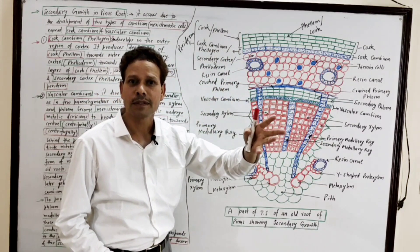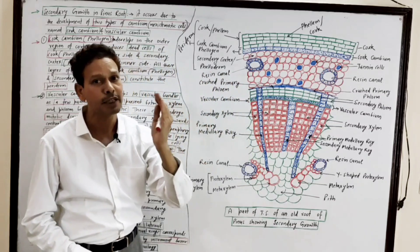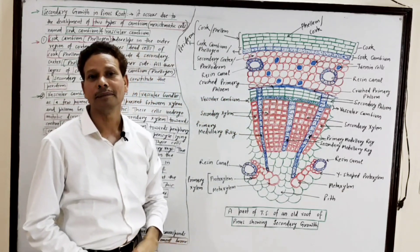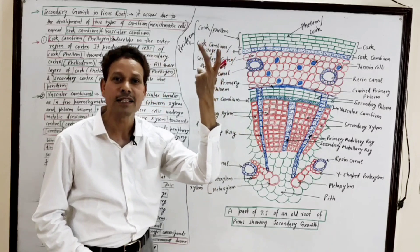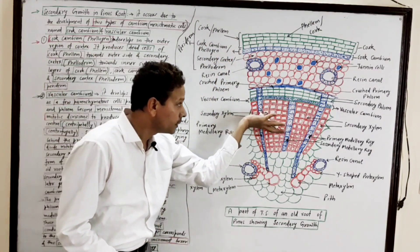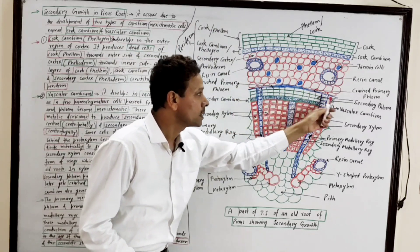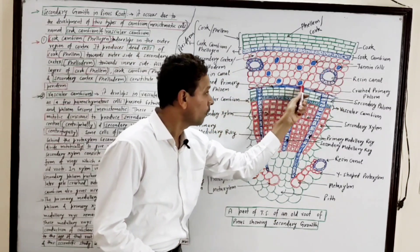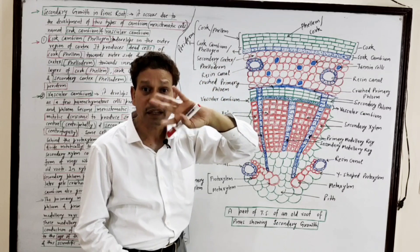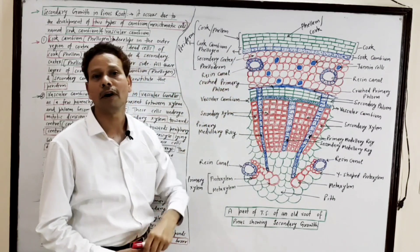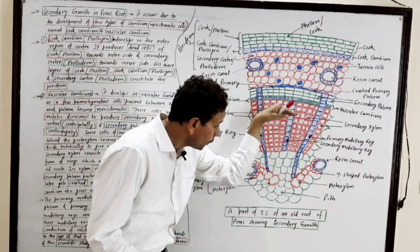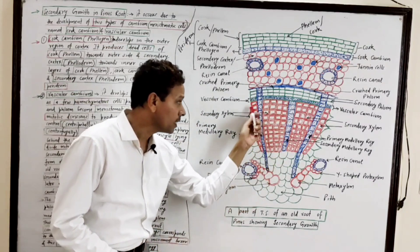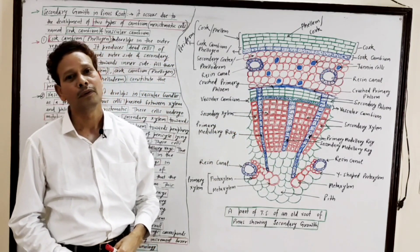Vascular cambium develops because parenchymatous cells present between primary xylem and phloem become meristematic. The vascular cambium undergoes mitotic divisions: centrifugally it gives rise to secondary phloem, and due to excessive secondary phloem growth, the primary phloem becomes very thin and crushed.